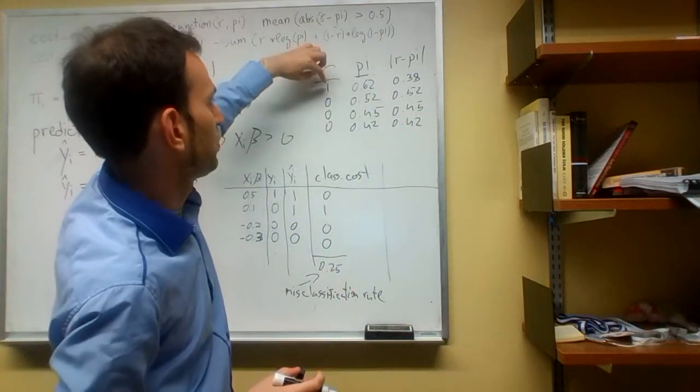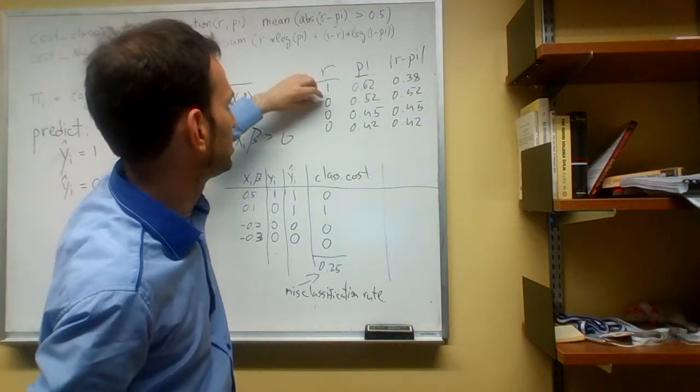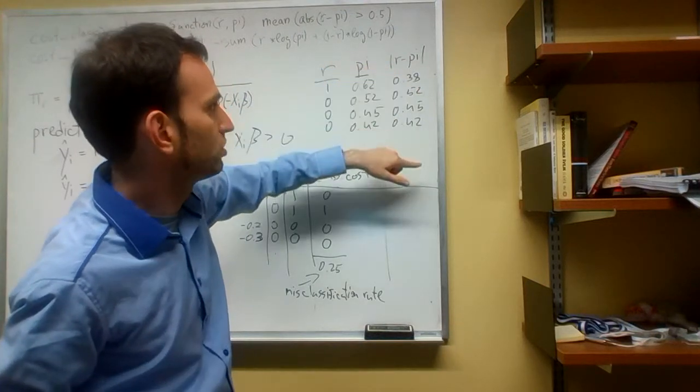So the distance between 1 and 0.62 is, you know, 0.38. The distance between 0 and all of those guys are just those guys.